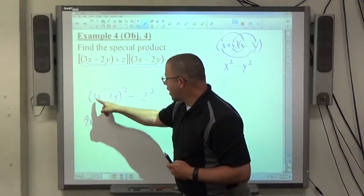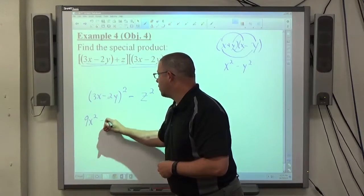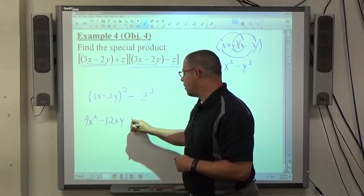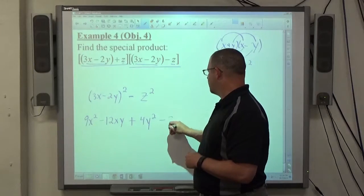We double the product. We have 3 times negative 2 is negative 6 times 2 is negative 12xy. We square the second object. The squares are always positive, so it's plus 4y squared minus z squared.